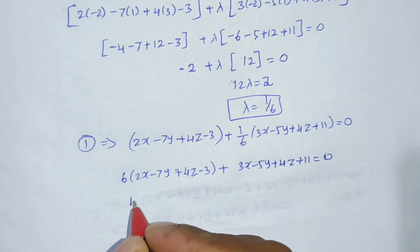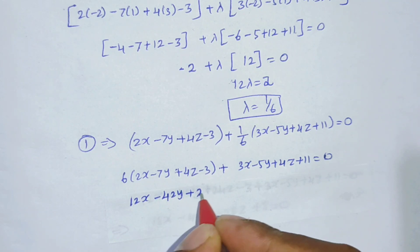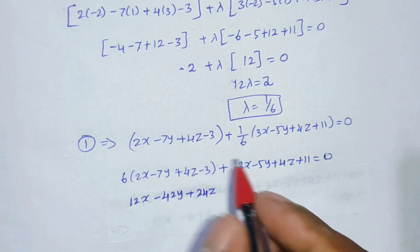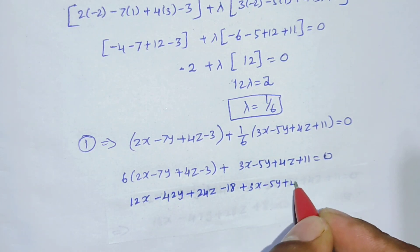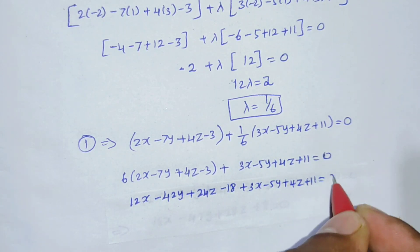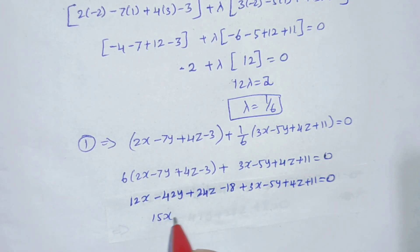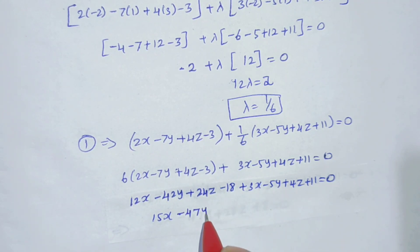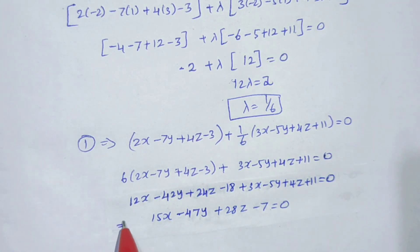Expanding: 12x minus 42y plus 24z minus 18 plus 3x minus 5y plus 4z plus 11 equals 0. Collecting like terms: (12 plus 3)x minus (42 plus 5)y plus (24 plus 4)z plus (minus 18 plus 11) equals 0, giving 15x minus 47y plus 28z minus 7 equals 0. This is the required equation of the plane.